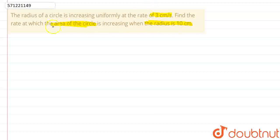So, in this question, it is given that dr by dt equals 3 cm per second. The radius of the circle is given and we need to find dA by dt. This is our question. And one more thing is given: we have to find dA by dt at r equals 10 cm.